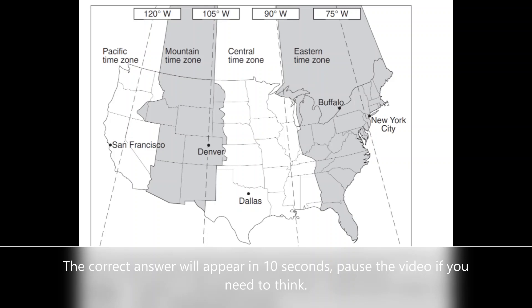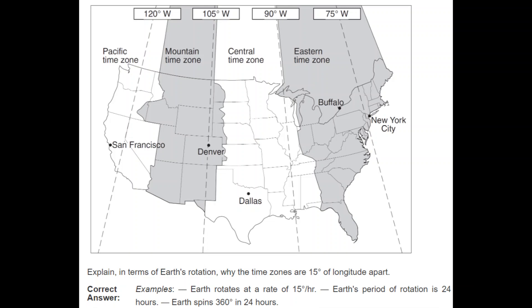Here's a short answer question for practice: explain, in terms of the Earth's rotation, why the time zones are 15 degrees apart. We will do one to two questions at the end of each video for you to practice.